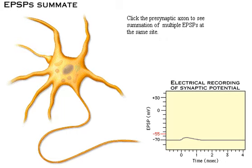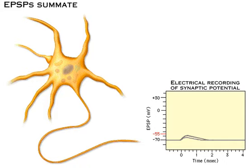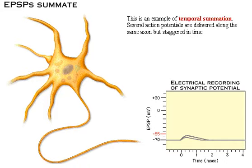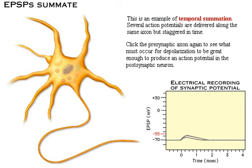Click the presynaptic axon to see summation of multiple EPSPs at the same site. This is an example of temporal summation — several action potentials are delivered along the same axon but staggered in time. Click the presynaptic axon again to see what must occur for depolarization to be great enough to produce an action potential in the post-synaptic neuron.